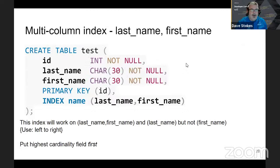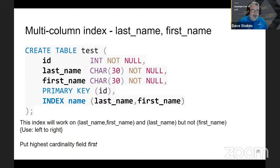You can also have multi-column indexes. In a table with columns for last name and first name, we create an index on last_name then first_name. To use this index you can search on last_name and first_name, or just last_name — it won't work on just first_name. It works left to right, so put the highest cardinality column first. If you're using year, month, day, that index will work on year+month+day, year+month, or just year — but not month+day, just day, or just month.